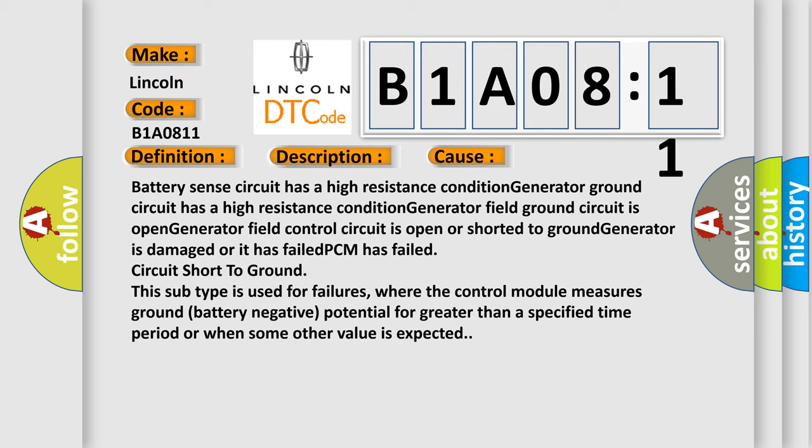Circuit short to ground: This subtype is used for failures where the control module measures ground battery negative potential for greater than a specified time period or when some other value is expected.